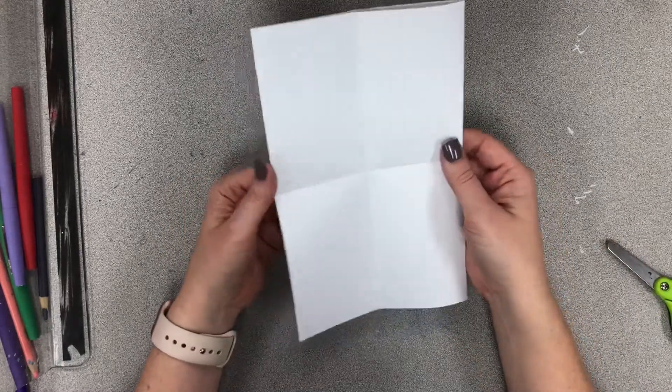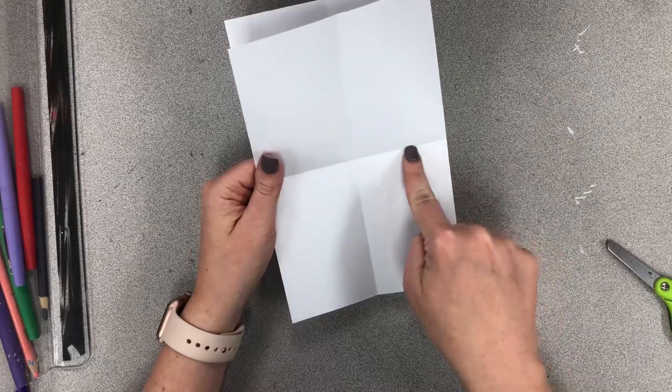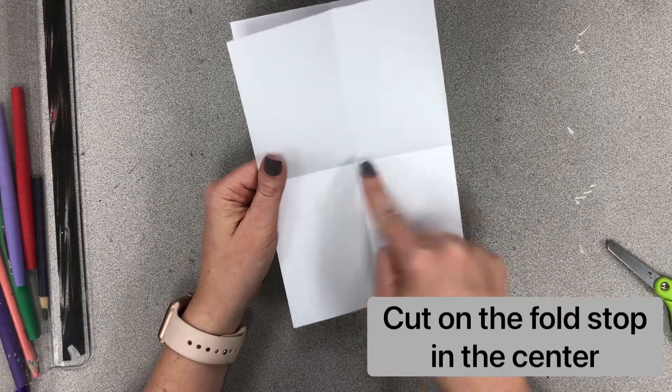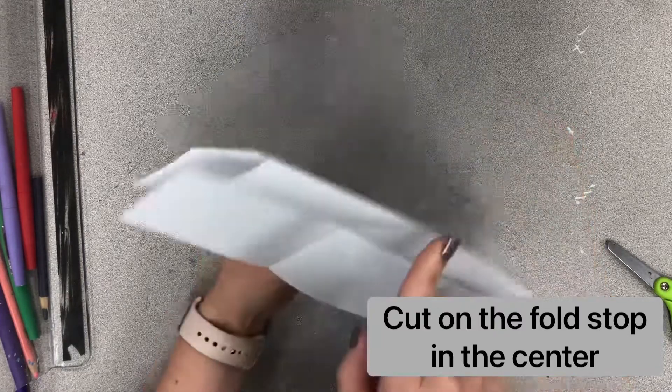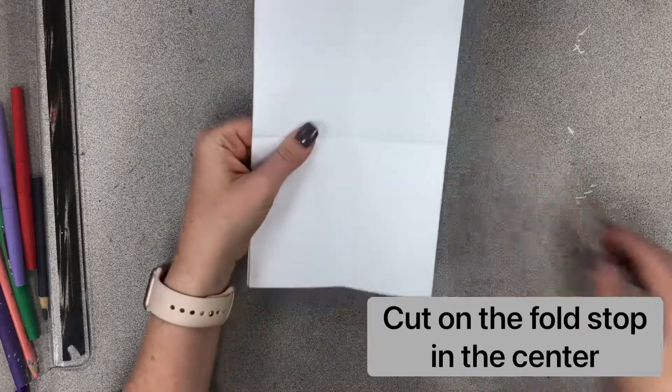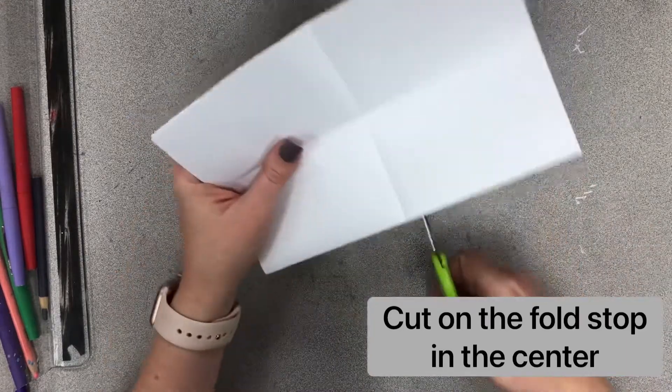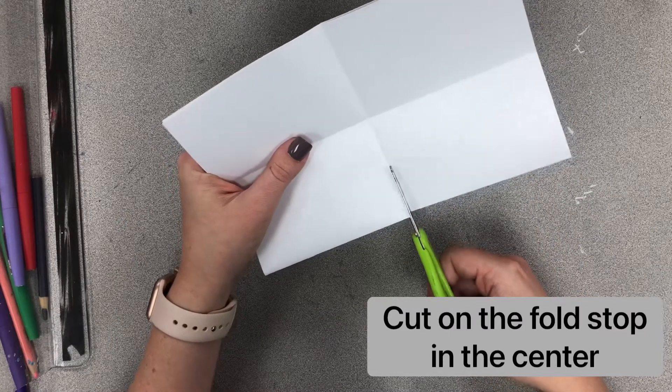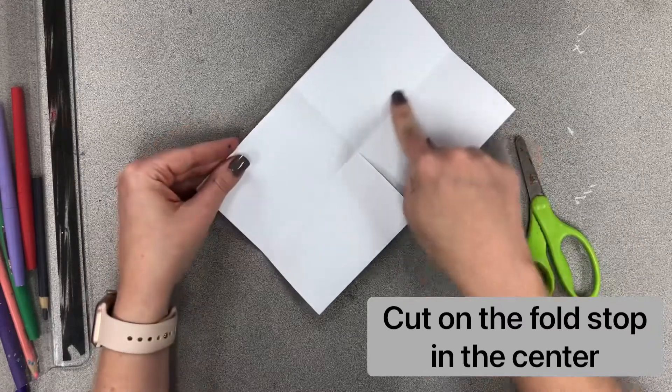So folding it back up this way, I want to cut on this line right here and stop at the center. I don't want to cut on the side where the paper opens. I want to cut on the side that has the fold. Okay. So on the side that has the fold, I will take my scissors and I will cut right up to where my other fold is.